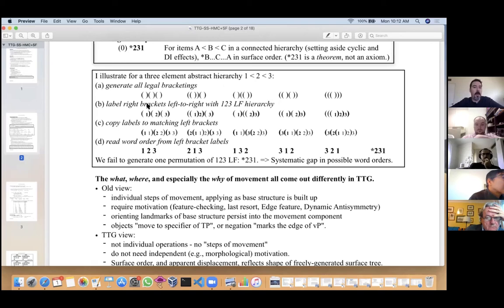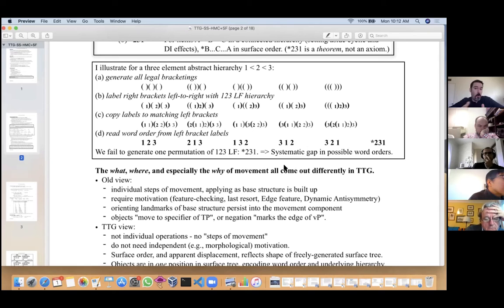You generate all those—there's five. You then write the 1-2-3 hierarchy onto each right bracket, labeling 1-2-3, 1-2-3, etc. The next step is to copy those labels onto the left brackets, and the order of the labels of the left brackets is the word order. You'll notice we get five orders: 1-2-3, 2-1-3, etc., and we rule out 2-3-1. We systematically fail to generate that permutation, and this is going to be our explanation for why there's this systematic gap in possible word orders.